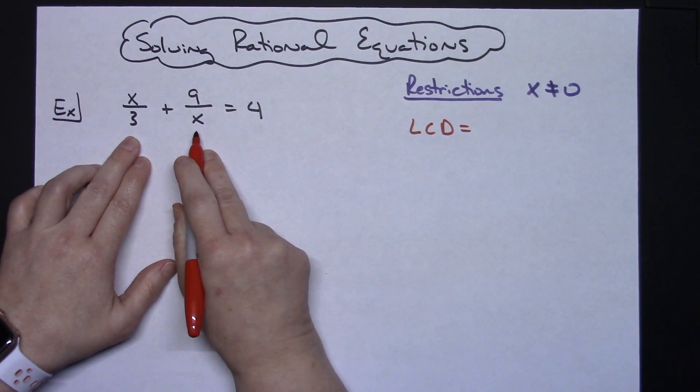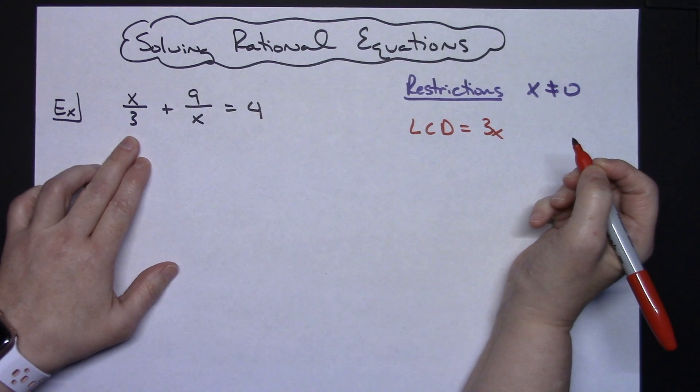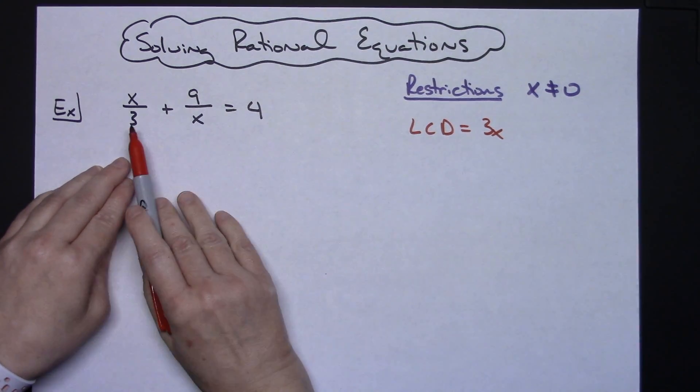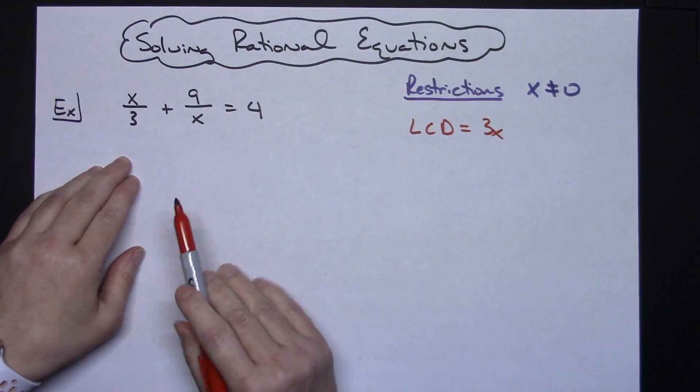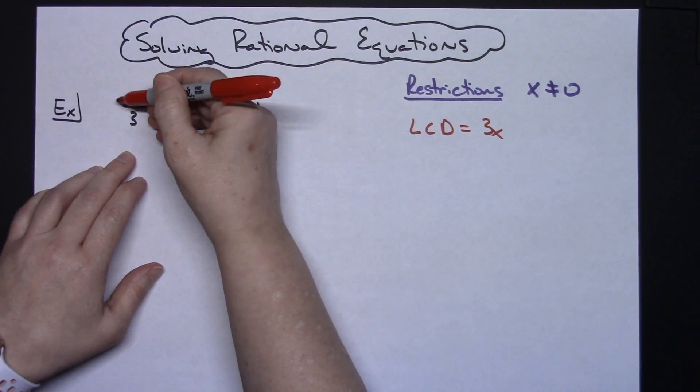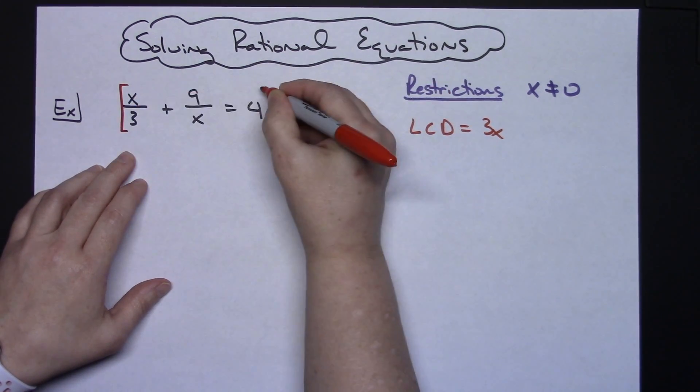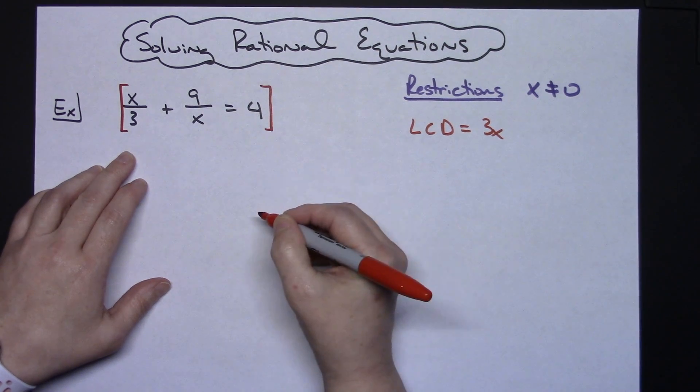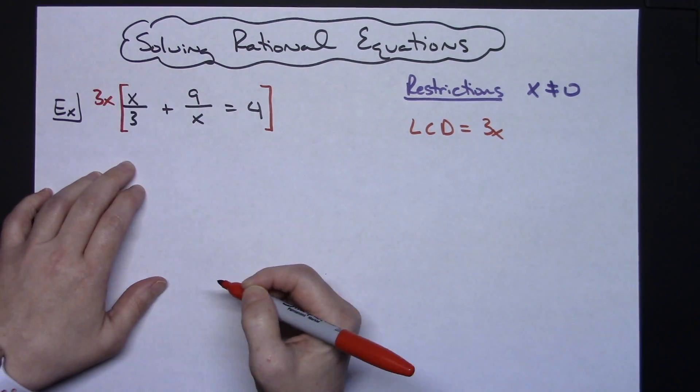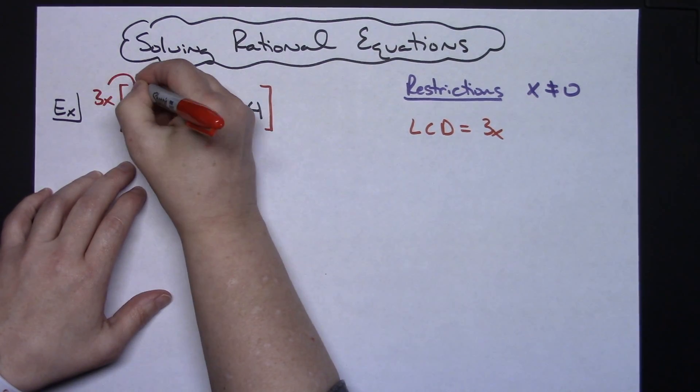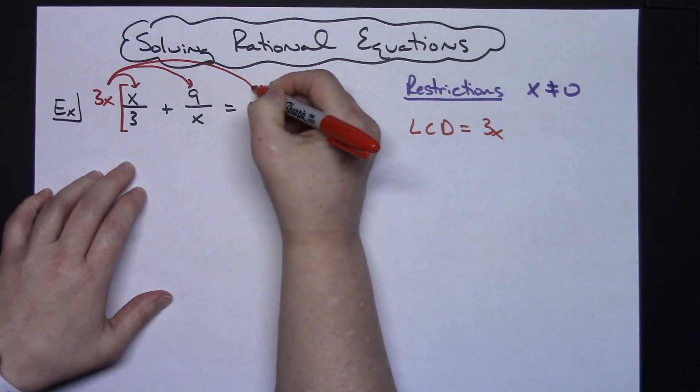I have a 3. I have an x. So 3 times x is going to be the least common denominator. Now technically I need to multiply all parts of this rational equation by 3x. A lot of teachers or people will write it next to all three items. I personally think that clutters up the problem. So what I usually do is put parentheses around the entire expression. I put my least common denominator out here because I'm going to multiply it and then distribute it to each one of the terms on the inside.